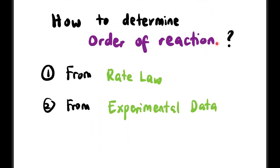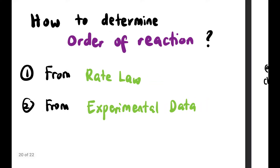So let's start with how to determine order of reaction. We have 2 ways — one from the rate law, and another one we can get from experimental data.